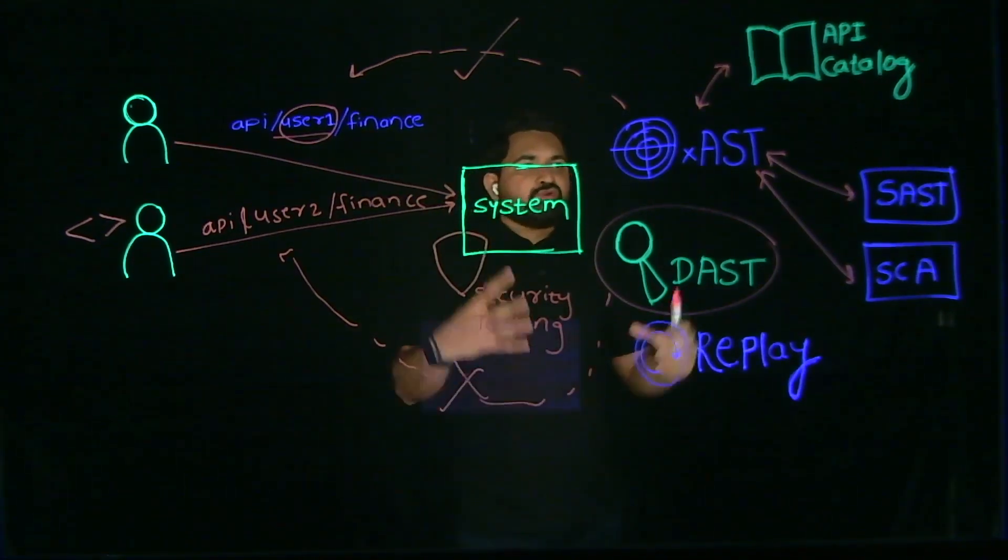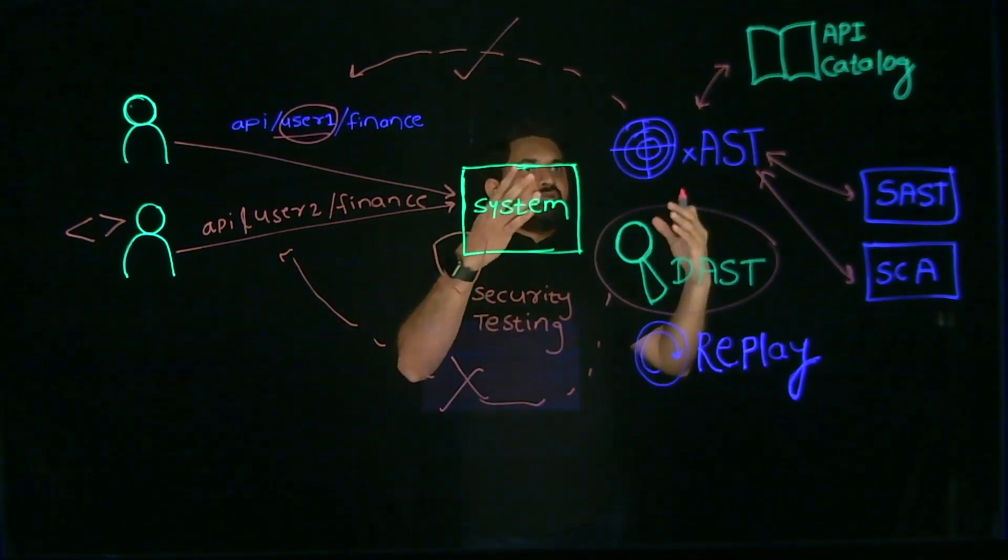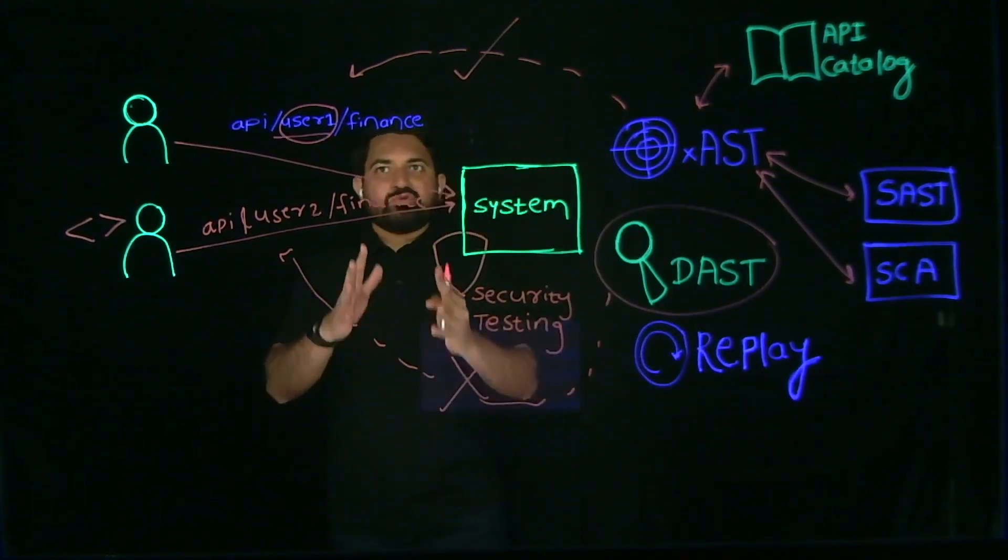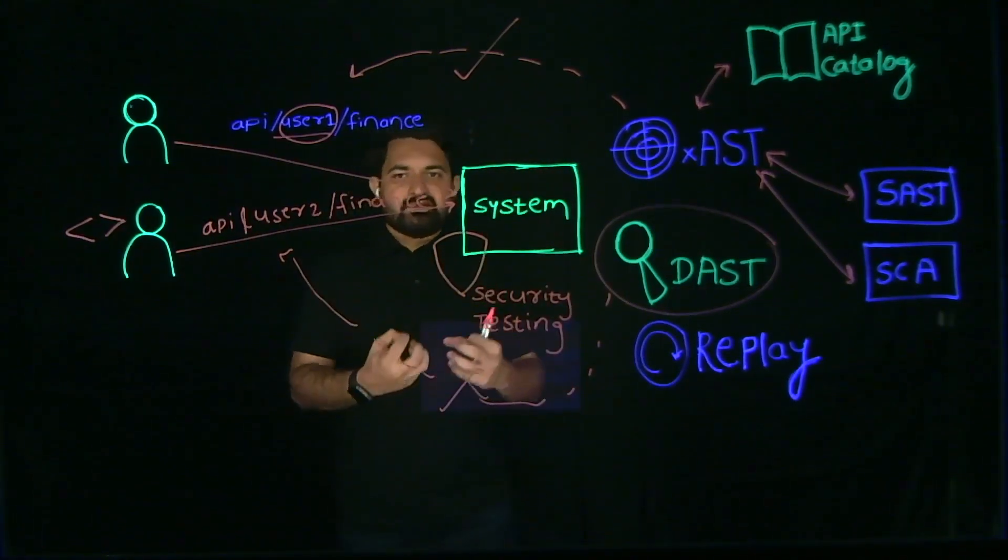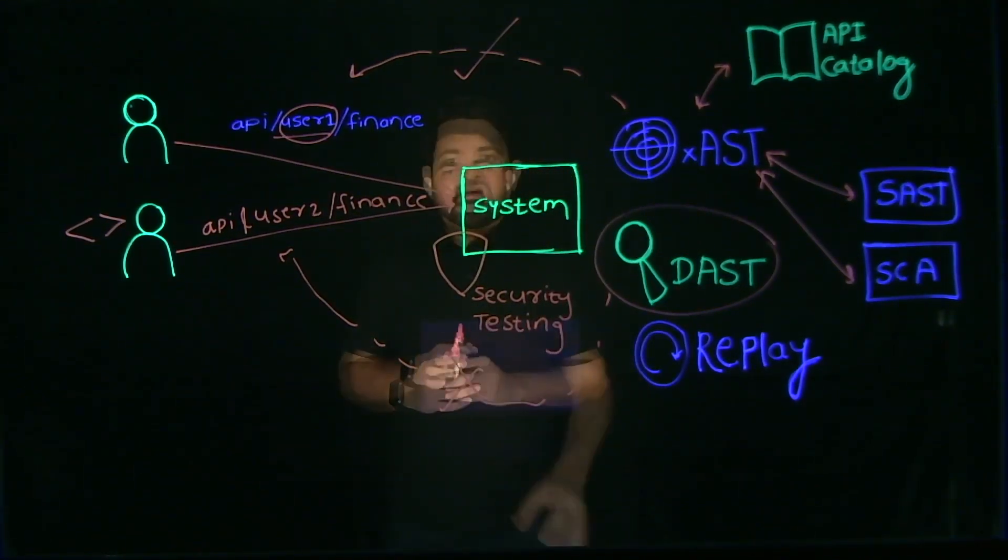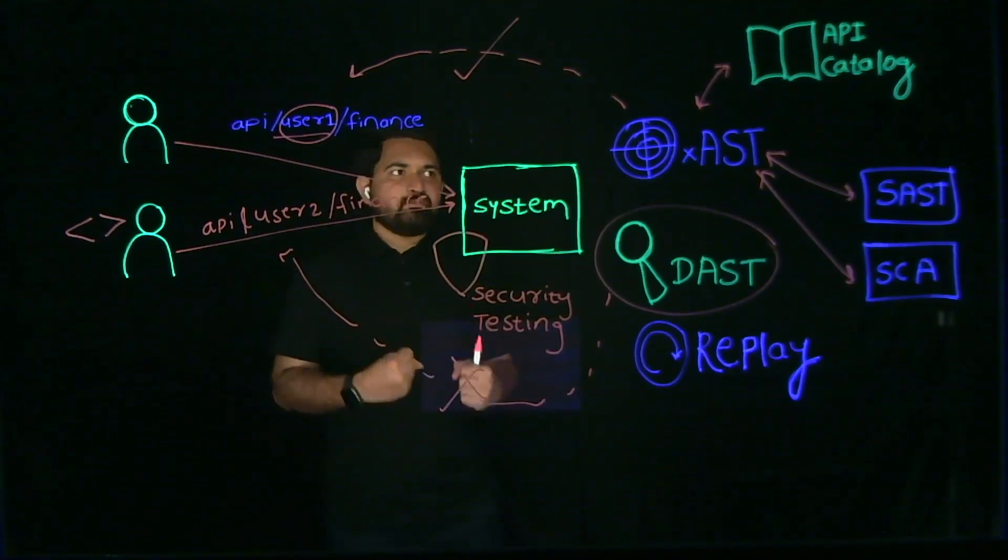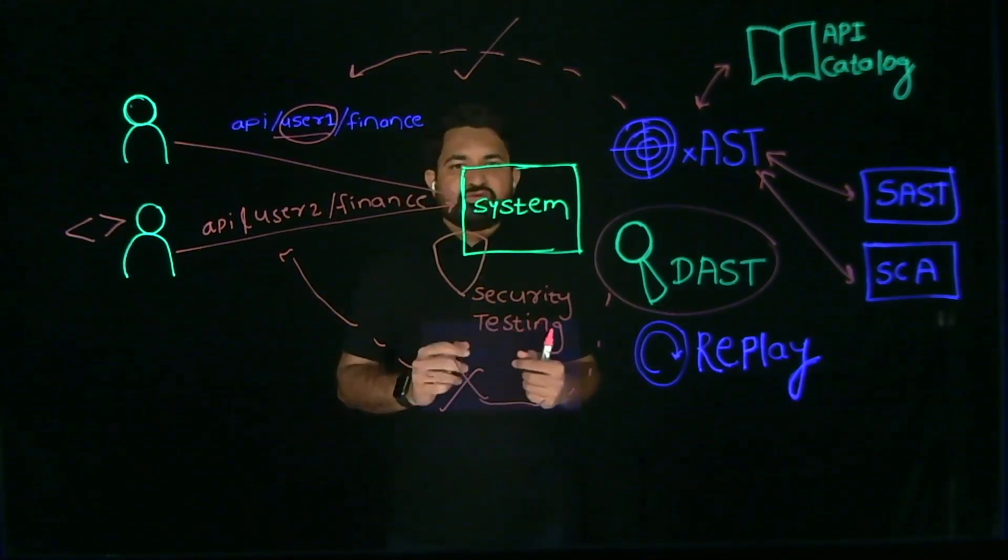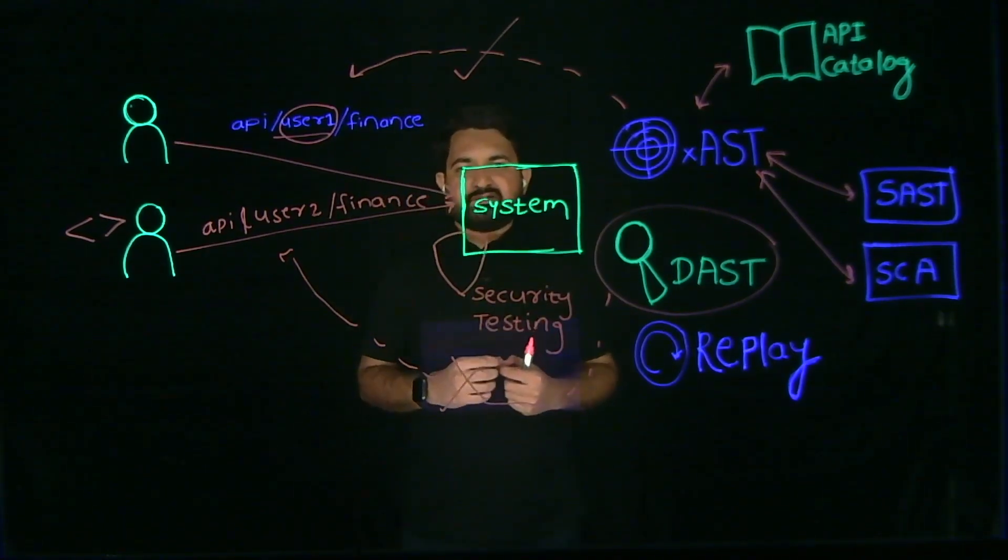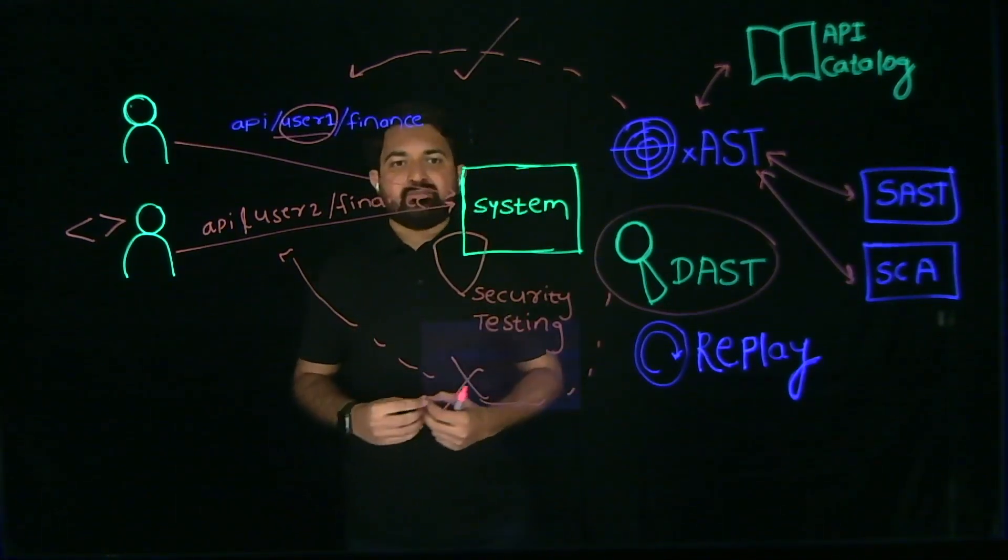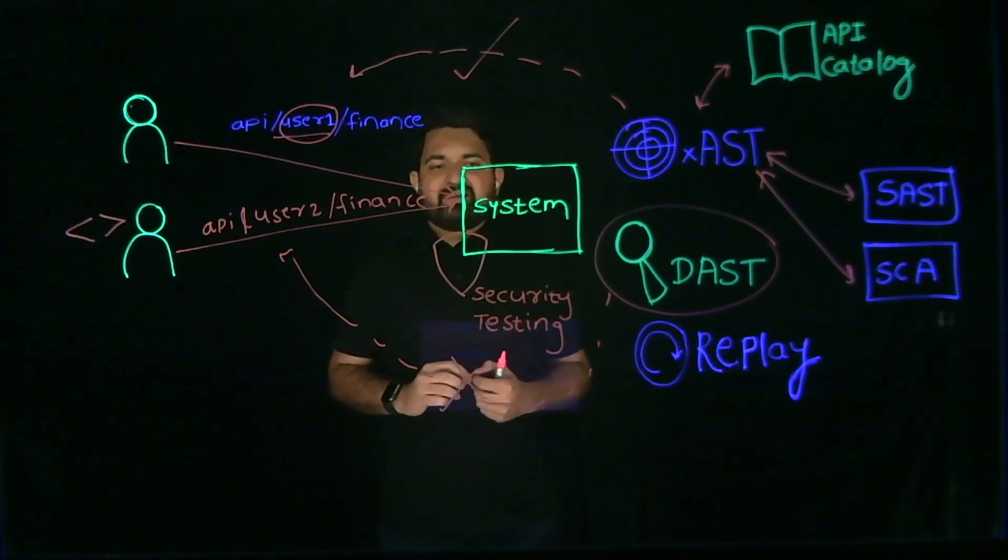This collaborative approach of talking to different tools like API catalogs from Traceable, different SAST and SCA tools to provide your complete and enhanced API security testing experience really helps. As we navigate through this increasingly complex digital world, evolving security testing methods is crucial. That's where a tool like Traceable XAST, which comes with live replay and even DAST capabilities built in, acts as a very strong defense against different kinds of modern threats.